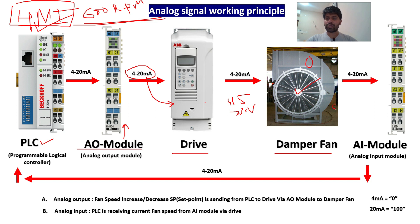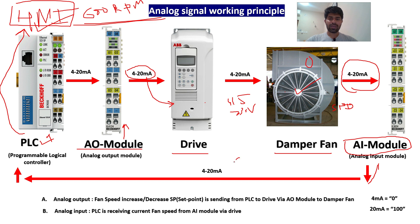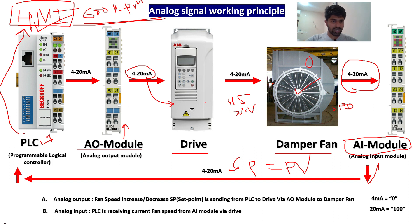Now the fan is started with the 600 set point. I want to know the feedback — what the actual speed is. I will have one speedometer, and from it I am taking the speed in RPM of the fan via 4 to 20 milliamps through a transmitter to the analog input module. From the AI module, I get the current RPM value and give it back to the PLC, which displays it on the HMI. So I give a set point and also receive the process variable value.